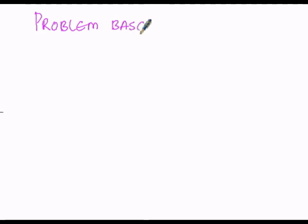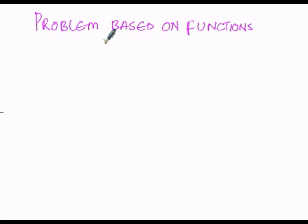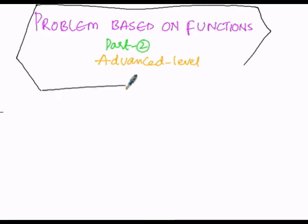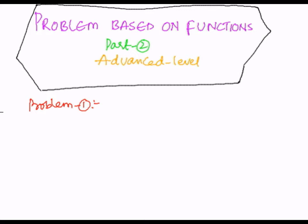Problem based on functions. We are going to perform problems based upon functions, part 2, at an advanced level. Here the first problem at an advanced level is problem number 1. In this problem, the first function f(x) is given as x plus 2, and the second function g(x) is given as x squared minus x minus 2.